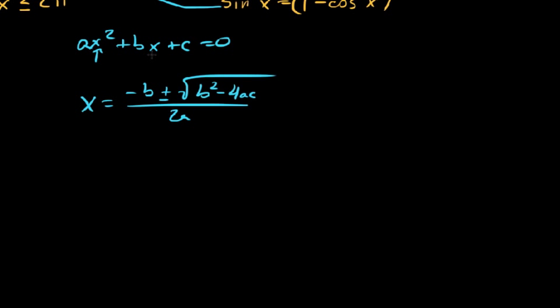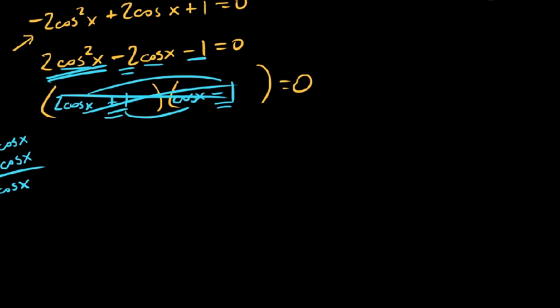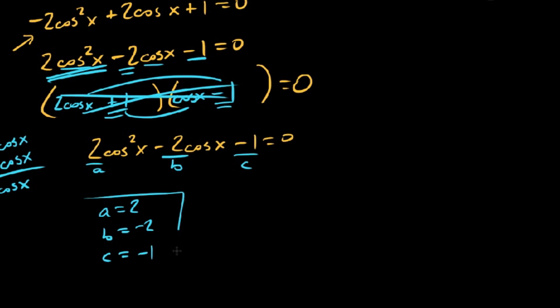In this case, instead of having an x here and here, you'll notice that we have cosines. So we're going to use our quadratic formula. Let's start by identifying our a, our b, and our c. So you'll notice here that with 2 cosines squared x minus 2 cosines of x minus 1 equal to 0, that we have an a value of 2, a b value of negative 2, and a c value of negative 1.